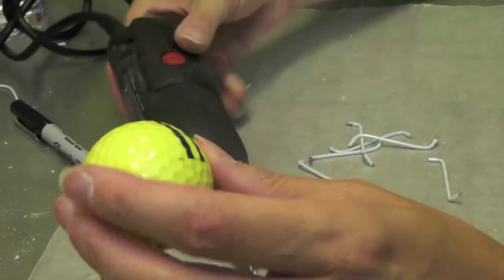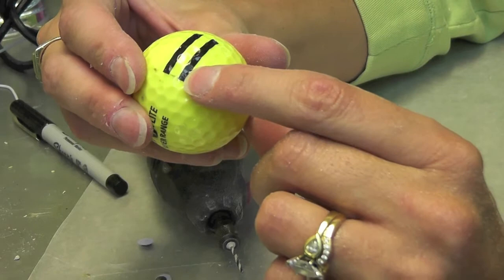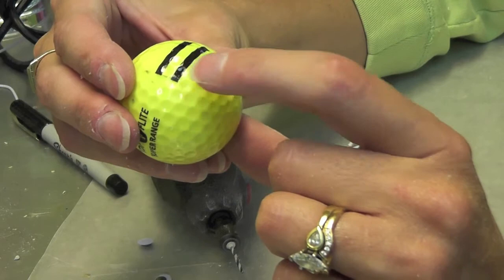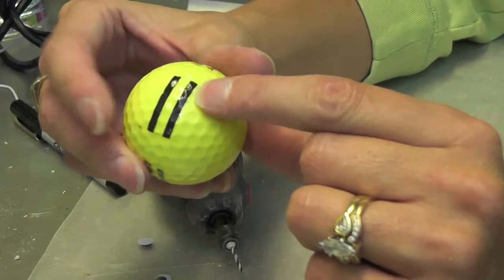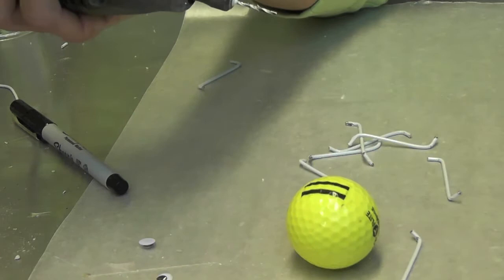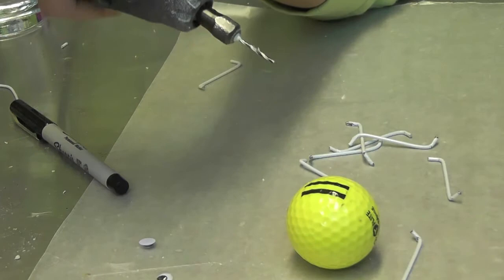So this ball that I happen to be using today is a range ball, and conveniently it has some stripes here. So I'm going to just drill four holes on each side because the spider has eight legs. I'm just going to kind of eyeball where they go, but I have these stripes that will be my guide. And I will do that and I'll show you how to insert the legs. Here it goes. Remember to put on your safety glasses. Safety first.